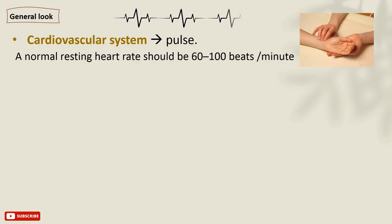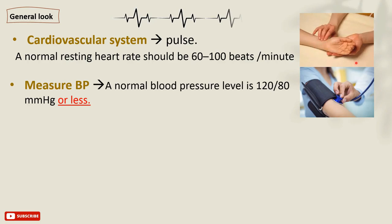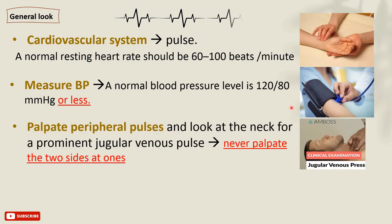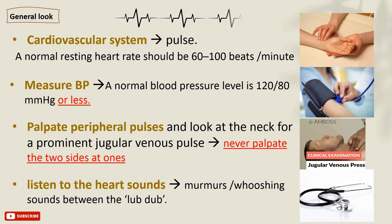Cardiovascular system. You start by measuring the pulsation. A normal resting heart rate should range between 60 and 100 beats per minute. Place three fingers over the radial artery and count the pulse, recognizing its characters. Then measure blood pressure — a normal level systolic over diastolic is 120 over 80 mmHg or less. Palpate peripheral pulsation and look at the neck for prominent external jugular vein pulsation; never palpate both sides simultaneously as it may cause the patient to lose consciousness. Use a stethoscope to listen to heart sounds — any abnormal murmurs or washing sounds between the lub-dubs indicate a serious heart condition.